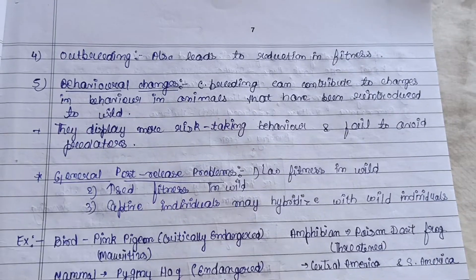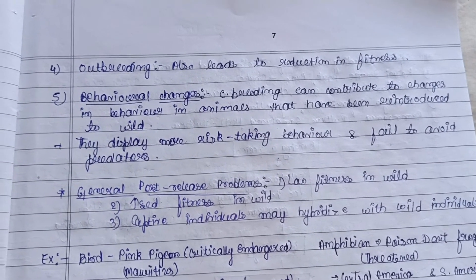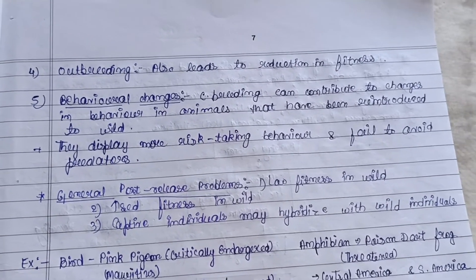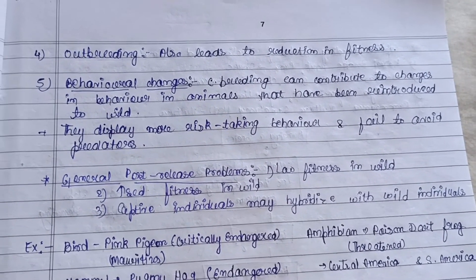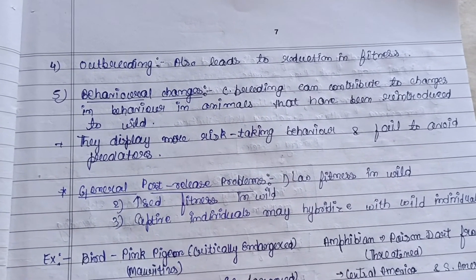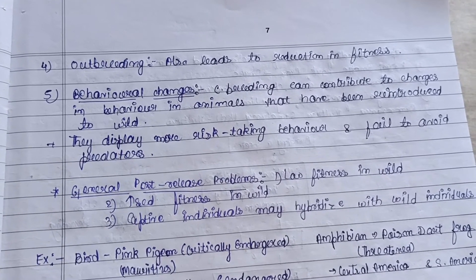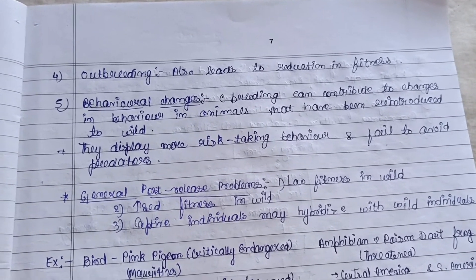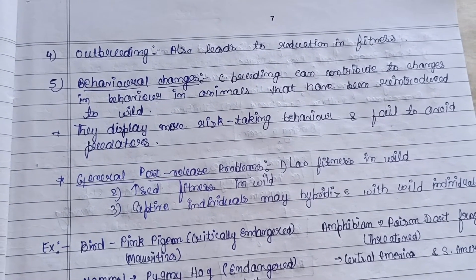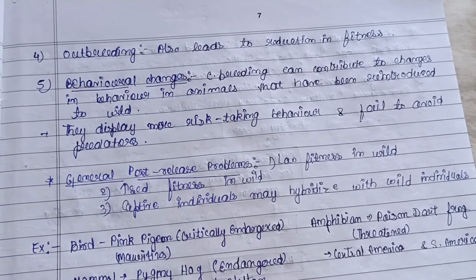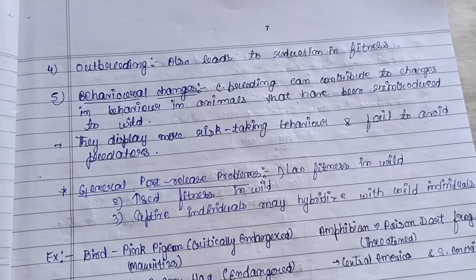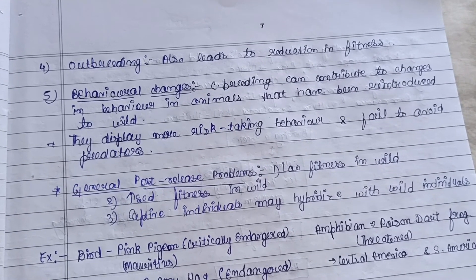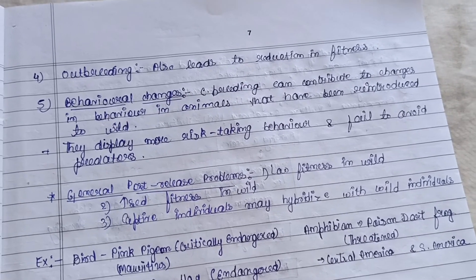Behavioral changes are another challenge: captive breeding can contribute to behavioral changes in animals reintroduced to the wild. They display more risk-taking behavior and fail to avoid predators, because in captivity they were not exposed to predators. General post-release problems include low fitness in the wild, absence of knowledge of predators, and captive individuals potentially hybridizing with wild individuals.